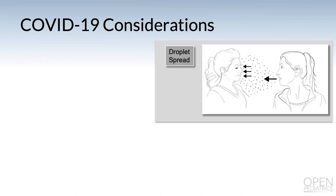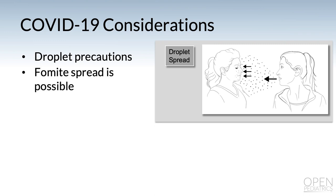Some very general COVID-19 considerations — this is not the platform to talk about case management. This is just around your safety. COVID-19 is requiring droplet precautions, and there is a lot of evidence that fomite spread or transmission is possible. Fomite is anything on the surface of any of our equipment or our clothes.